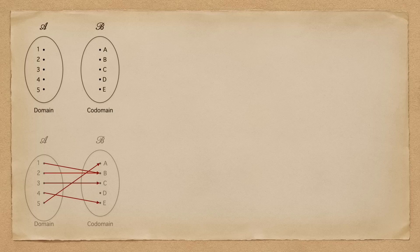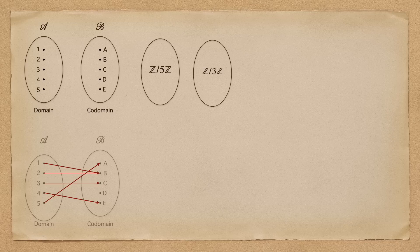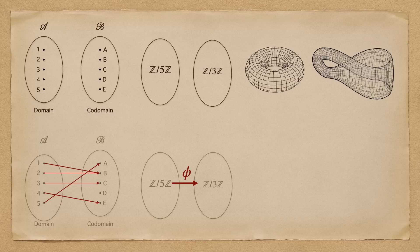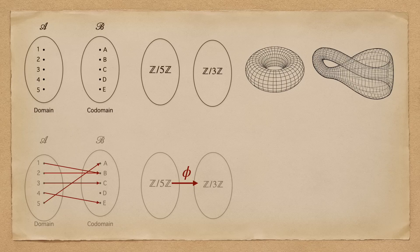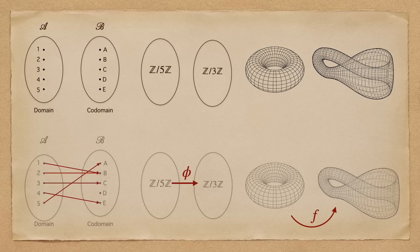In group theory, groups are the objects that we're concerned with, and we use group homomorphisms to study how groups interact with each other. In topology, we have our topological spaces, and we use continuous functions to study how one space is mapped to another.